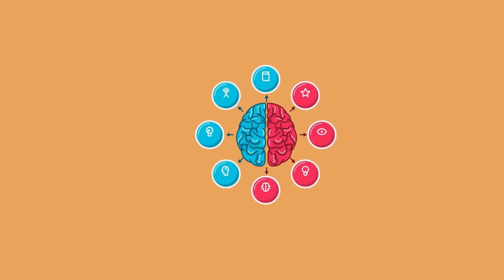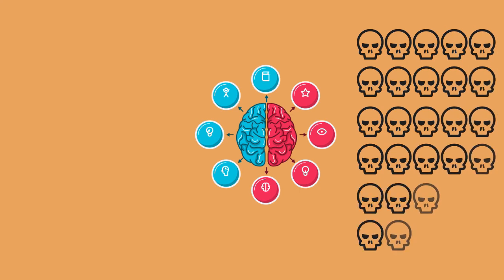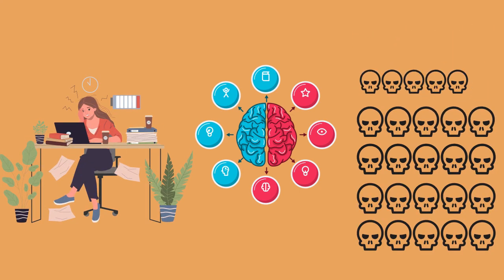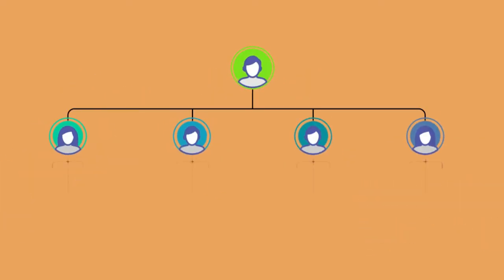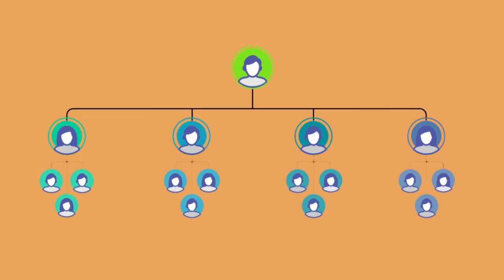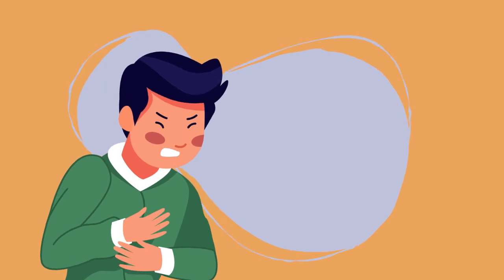This experiment reveals a lot about our nature. It explains everything from how mass executions are possible to how horrible policies have been established at workplaces. One person cannot reach such influence, but through people who perceive him or her as an authority figure, the words and orders will be carried through to subordinates and thus influence a greater number of people, potentially causing more harm and suffering in the process.